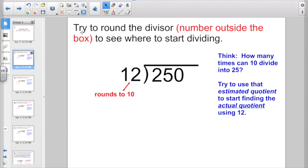So to start off with, when you're trying to divide by two-digit numbers, if you're fuzzy on your multiplication facts, one little tip would be try to round the divisor to see where to start dividing.